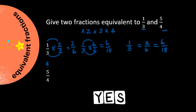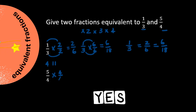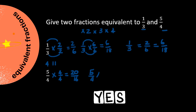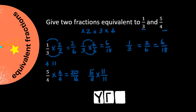I chose four and eleven. Five over four times four over four is equal to twenty over sixteen. And if we start with the original fraction again, five over four times eleven over eleven, we get 55 over 44.